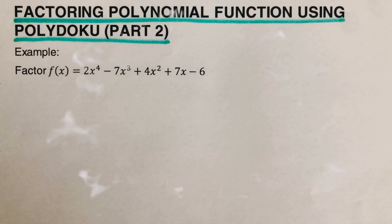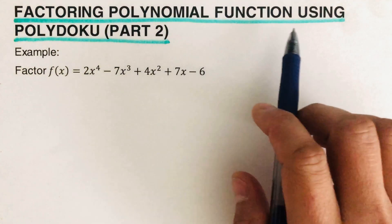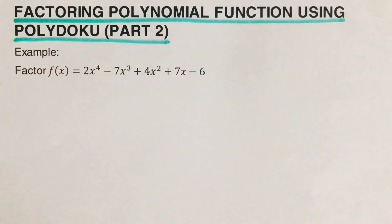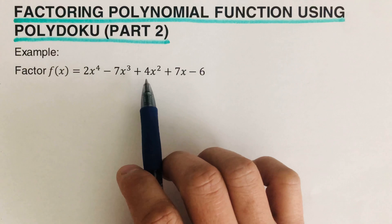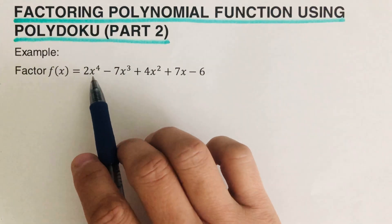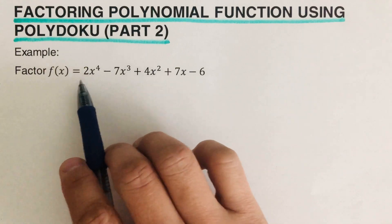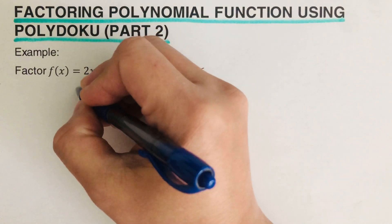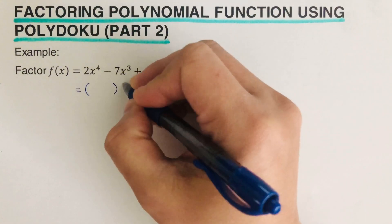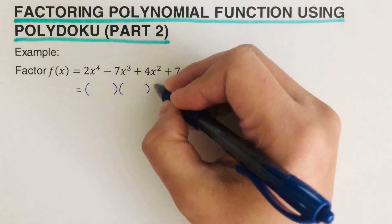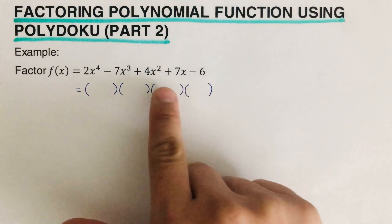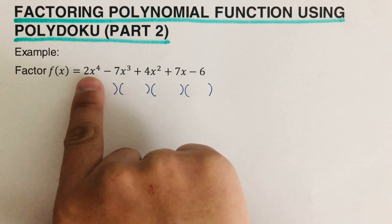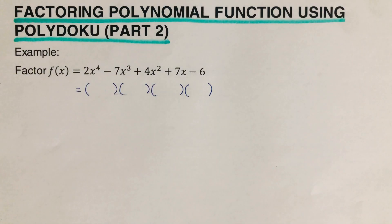Hello everyone. In this video we will be factoring a polynomial function using polydoku, and this is the second part. I will put the link of the first part in the description box below. In this part, we are given a function and we are supposed to determine all of the factors. Since our highest exponent is four, this means there are four factors for this polynomial, so I can go ahead and write four parentheses here.